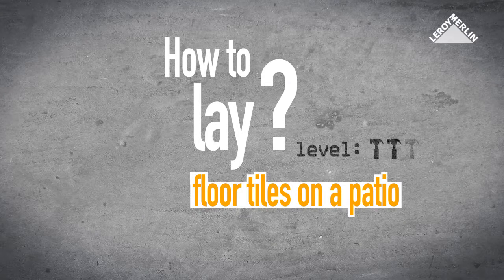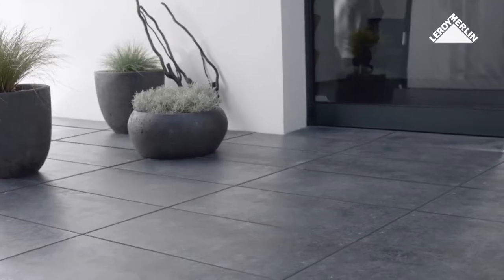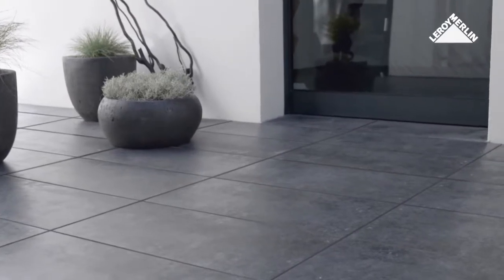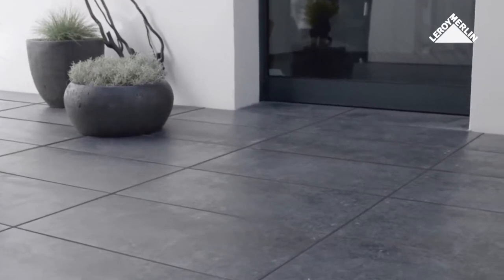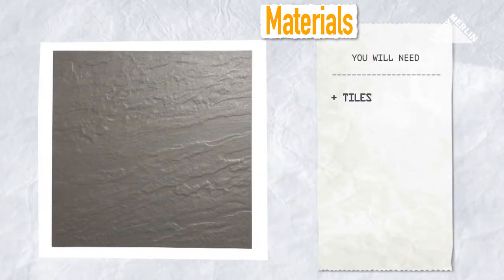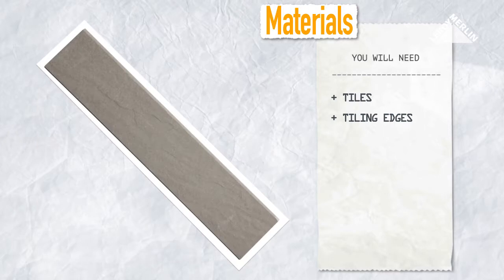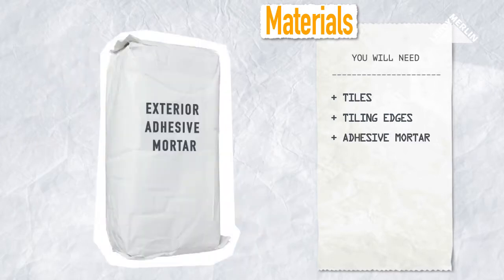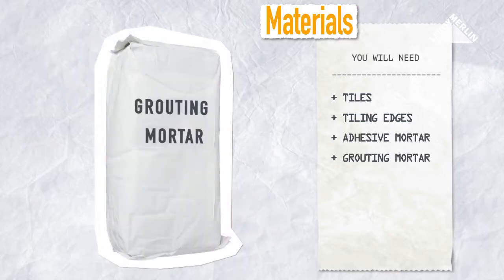How to lay floor tiles on a patio. If you lay tiles on your patio, it will extend your home out into the center of your garden. You'll need exterior tiles, tiling edges, adhesive mortar for exterior tiles, grouting mortar, silicon mastic, spacers, and sawdust.